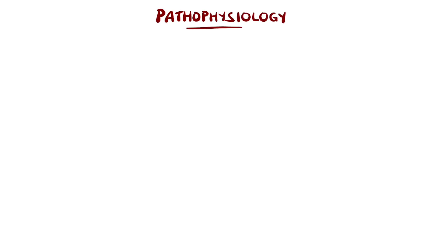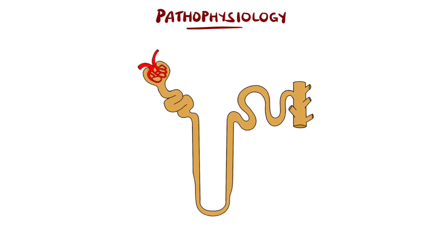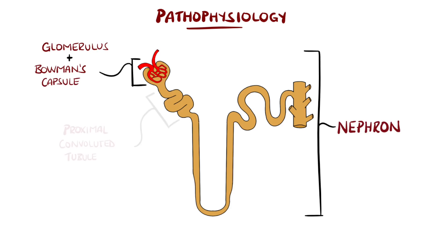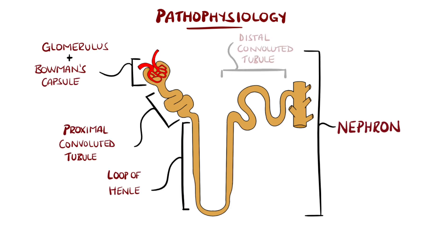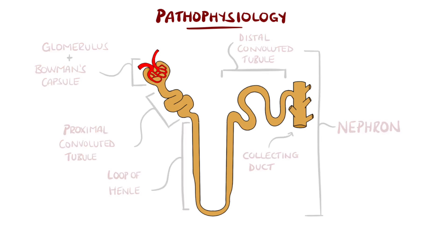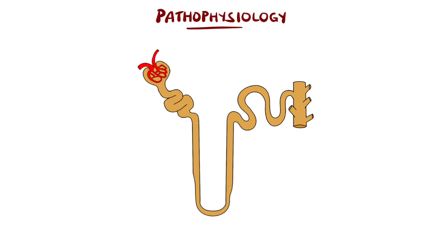The normal functional unit of the kidney is the nephron, made up of a glomerulus and Bowman's capsule, proximal convoluted tubule, loop of Henle, distal convoluted tubule and collecting duct. Blood filters through the glomerulus, forming filtrate, which then passes through the tubules, undergoing secretion and reabsorption, eventually forming urine and passing into the ureter and bladder.